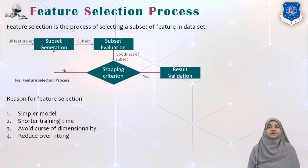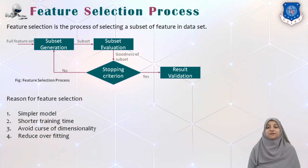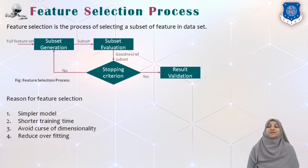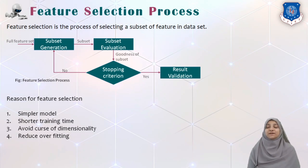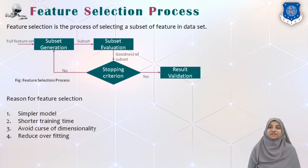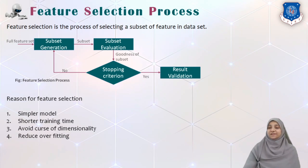Feature Selection is a four-step process. The first step is subset generation. The second step is subset evaluation. The third step is stopping criteria. And the final step is result validation.